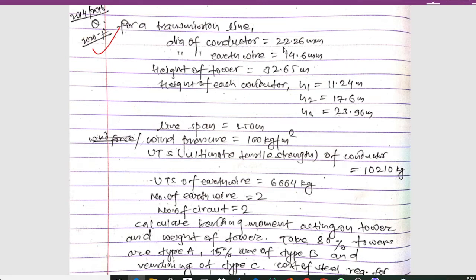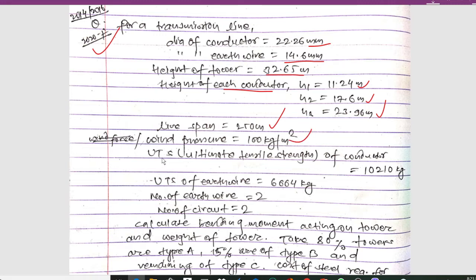In this numerical, the diameter of the conductor is given as 22.6 mm, diameter of earth wire is 14.6 mm, height of tower is 32.65 meters, height of each conductor: s1 = 11.24 m, s2 = 17.6 m, s3 = 23.96 m, line span is 250 meters, and wind pressure is 100 kg per meter square.